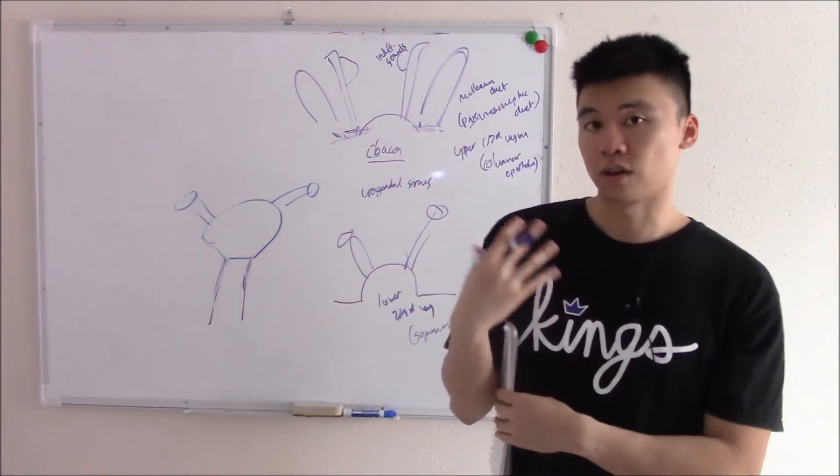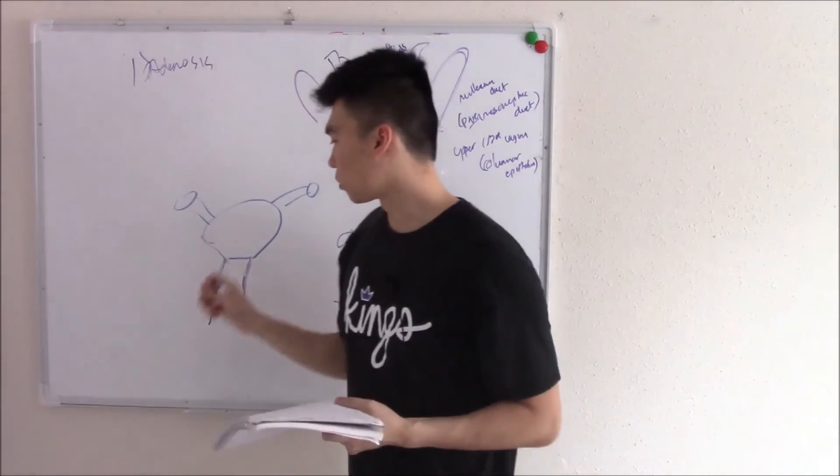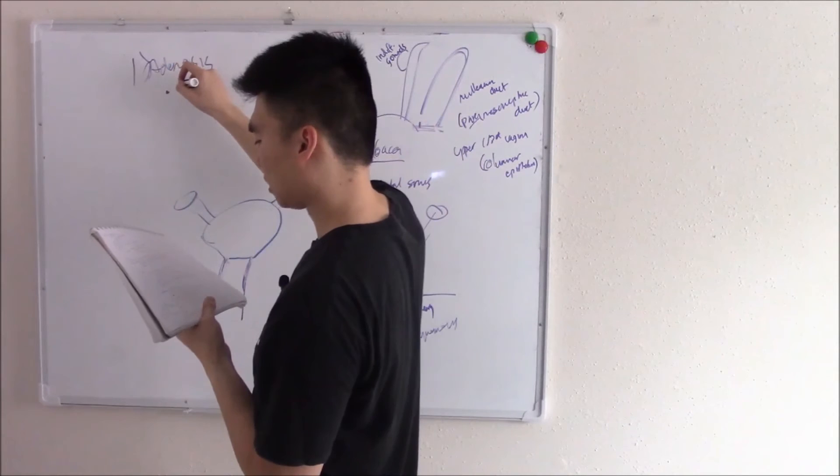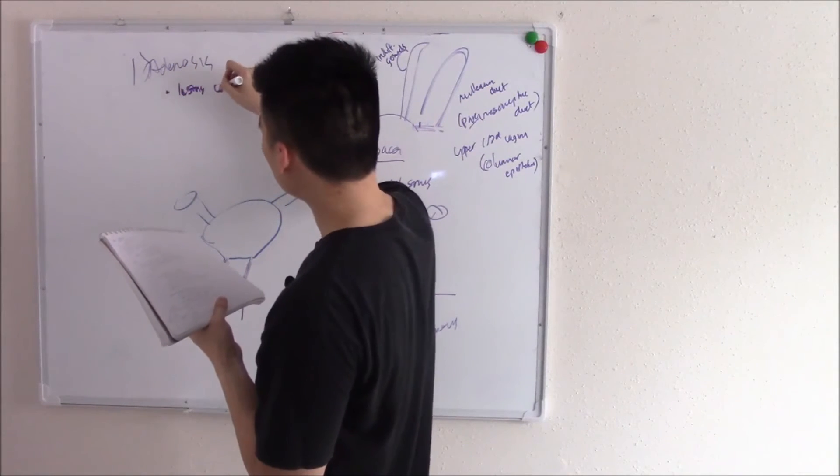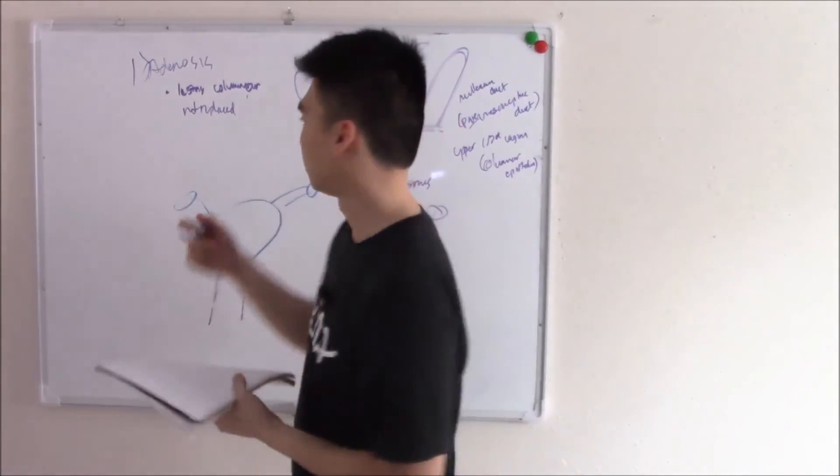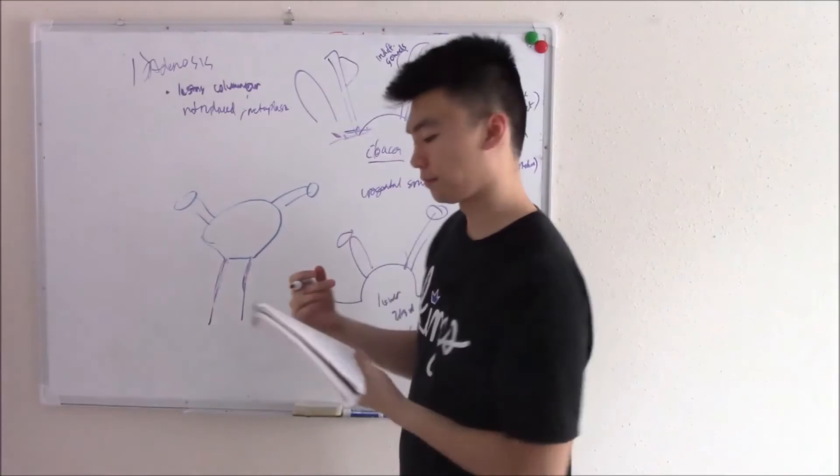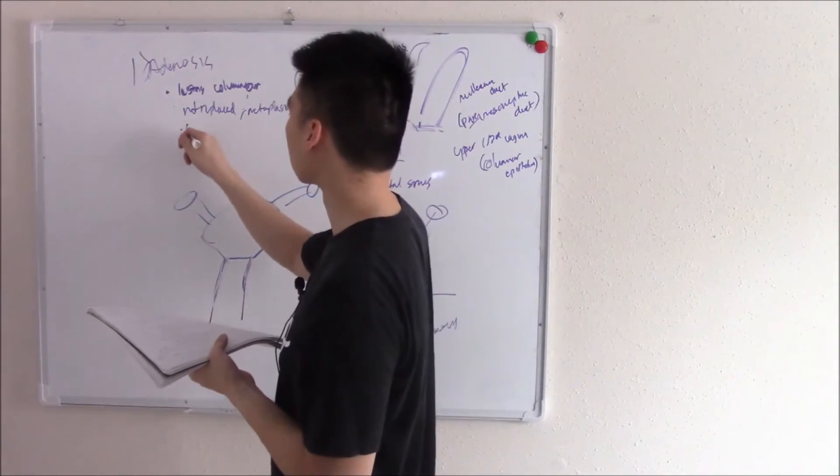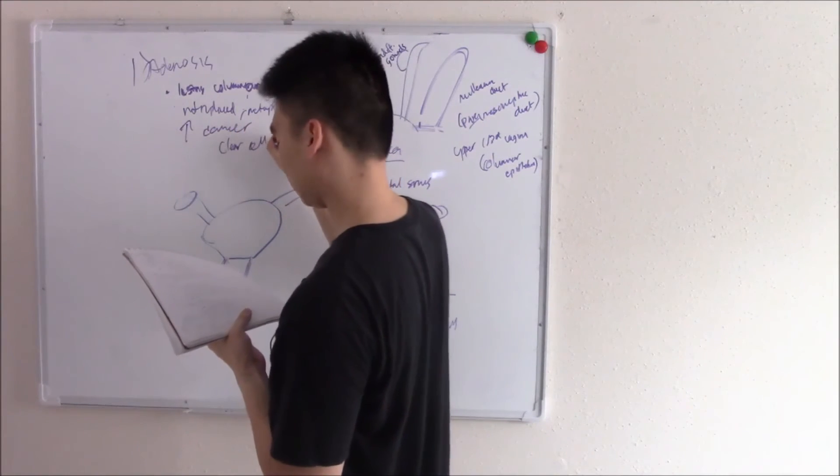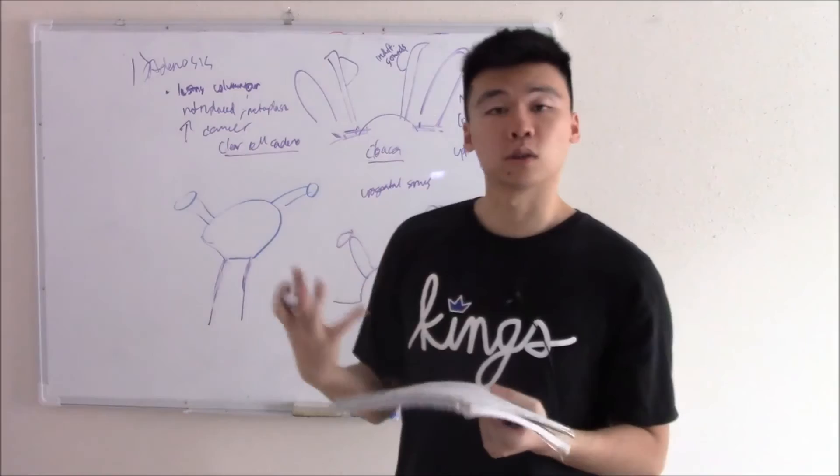You need to understand that for a disorder called adenosis. This is when the columnar isn't replaced by squamous, so you have that lasting columnar. Now this can be because it wasn't replaced, or sometimes these cells can undergo metaplasia and change from squamous to columnar. Whatever the case may be, this isn't normal. There's an increased risk of cancer, namely clear cell adenocarcinoma. They call it clear cell because the cells are full of glycogen and they look kind of clear.